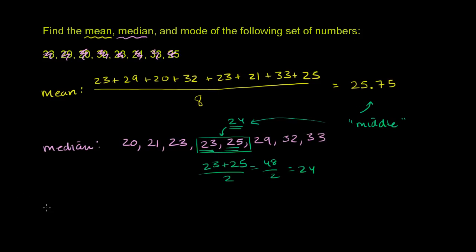Then finally, we can think about the mode. And the mode is just the number that shows up the most in this data set. And all of these numbers show up once, except we have the 23, it shows up twice. And so since 23 shows up the most, it shows up twice, every other number only shows up once, 23 is our mode.